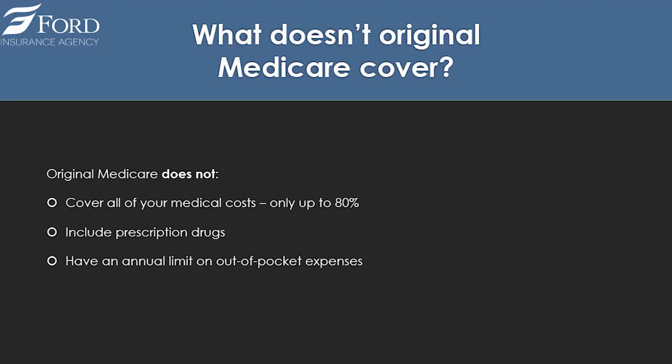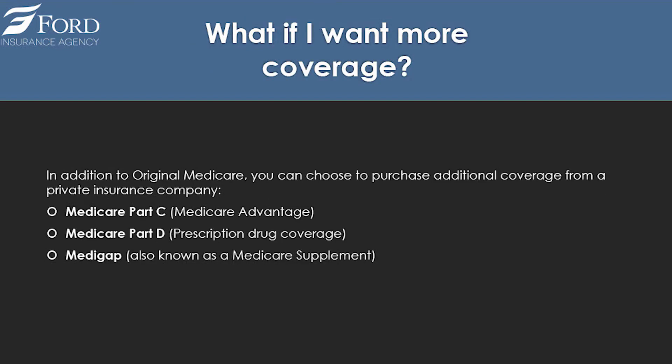Both Part A and B have deductibles before they start to pay, and Part B typically covers 80% of all of your medical services. Original Medicare does not cover all of your medical costs — only up to 80%. It does not include prescription drugs, and it does not have an annual limit on your out-of-pocket expenses. In addition to Original Medicare, you can choose to purchase additional coverage from a private insurance company: Medicare Part C (also known as Medicare Advantage), Medicare Part D for prescription drugs, and a Medigap policy, also known as Medicare Supplement.